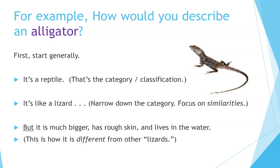For example, how would you describe an alligator? First, start generally. It's a reptile — that's a category or classification, a type of animal. It's like a lizard. Narrow down the category or group; focus on similarities. But an alligator is much bigger, has rough skin, and lives in the water. That is how it is different from other lizards.